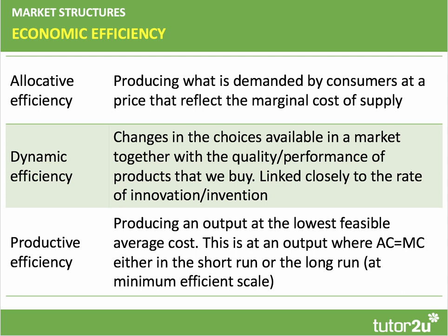Productive efficiency is when a firm gets output to market at the lowest feasible average unit cost — normally where average cost equals marginal cost, either in the short run at the intersection of MC and AC, or in the long run when the firm reaches its minimum efficient scale.